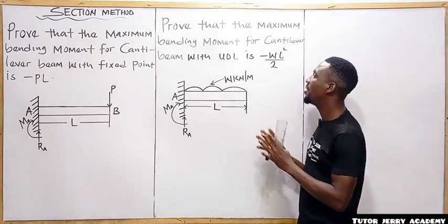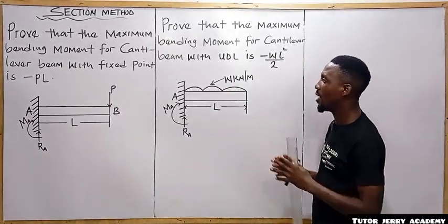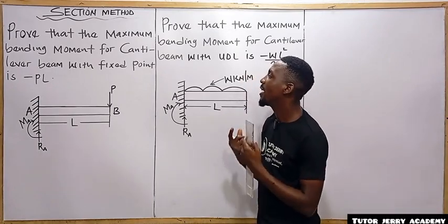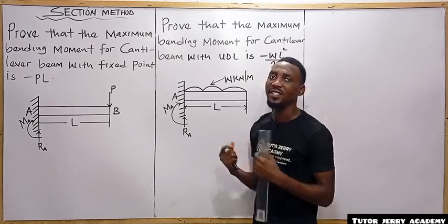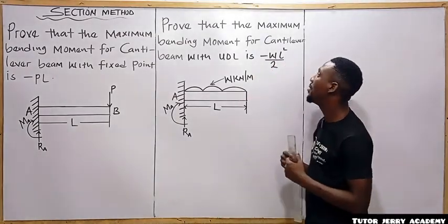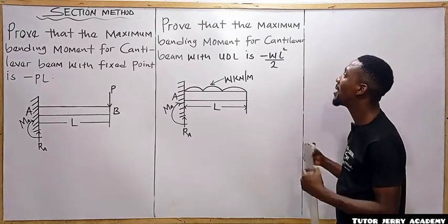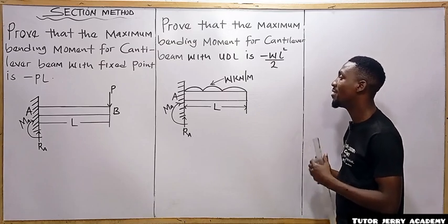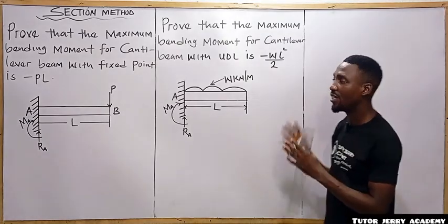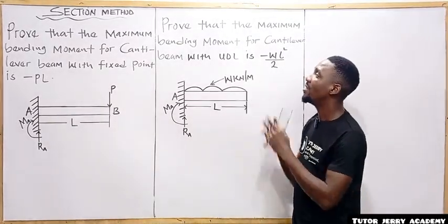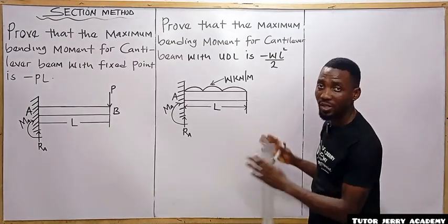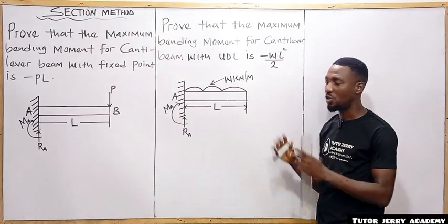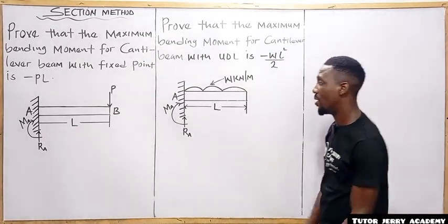We are going to be solving two questions. The first says we should prove that the maximum bending moment for a cantilever beam with a point load is negative PL. The second says we should prove that the maximum bending moment for a cantilever with a UDL is negative WL squared over 2. We are still under the sectioning method, but you only need two steps and you are done.